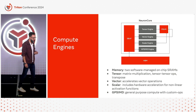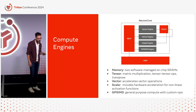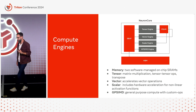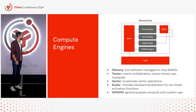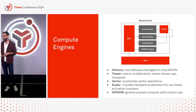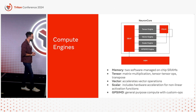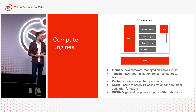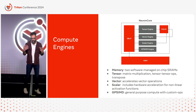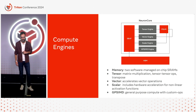The Vector Engine is explicitly built for accelerating vector operations, and there are scalar operations on the Scalar Engine — also including hardware acceleration for nonlinear activation functions such as Square Root and GeLU. We also have a general-purpose GPSIMD engine, which can be programmed with custom ops but can also be used from within the compiler.